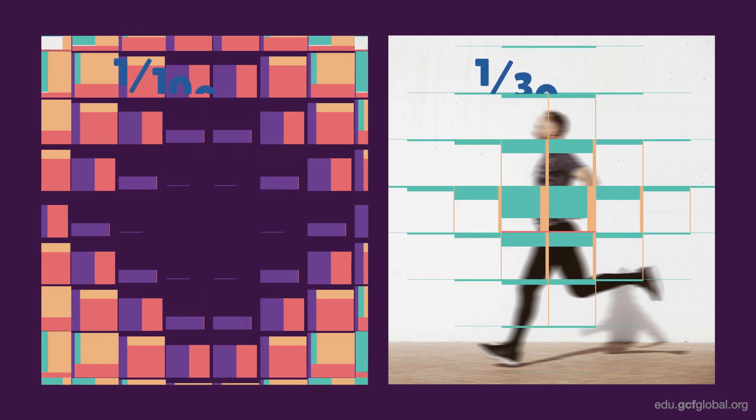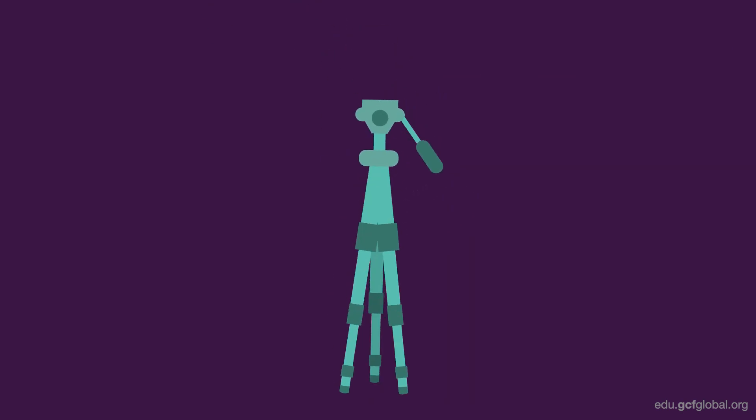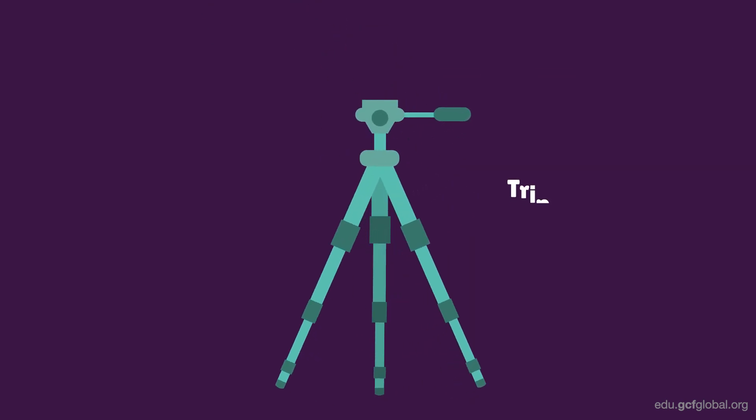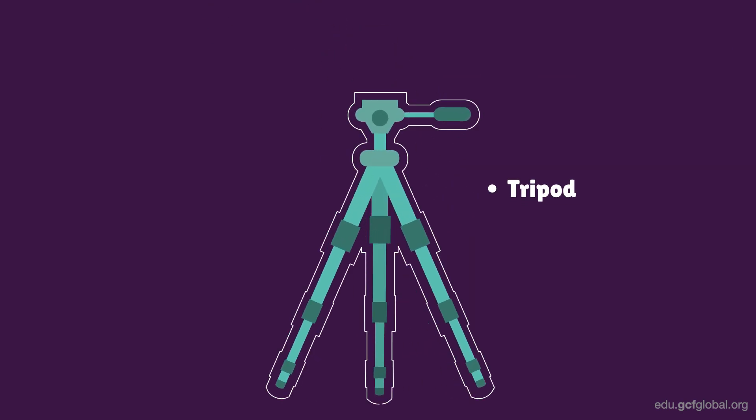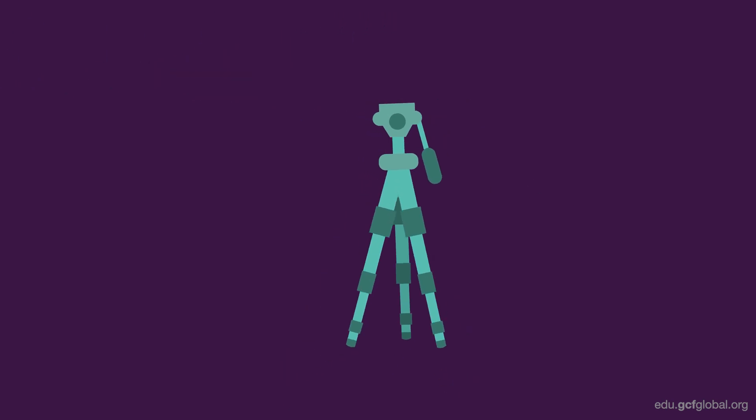When using a slower shutter speed, try to use a camera tripod in order to keep the camera as still as possible, because any additional movement of the camera will only add to the blurriness of the picture.